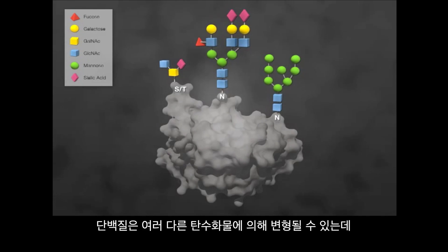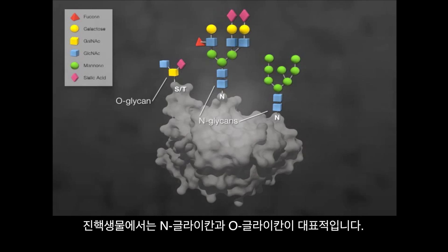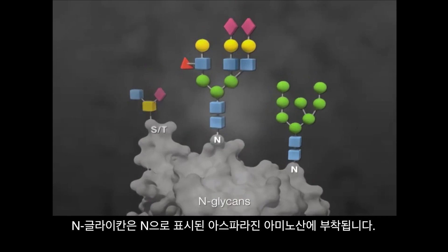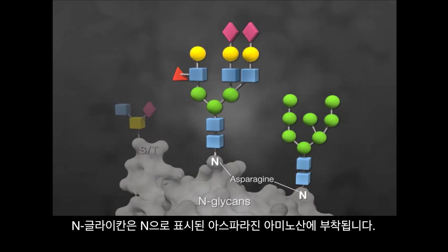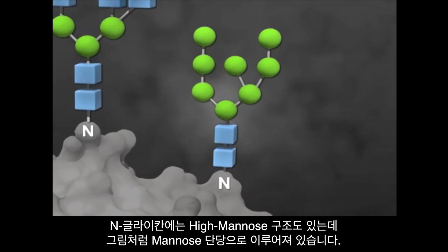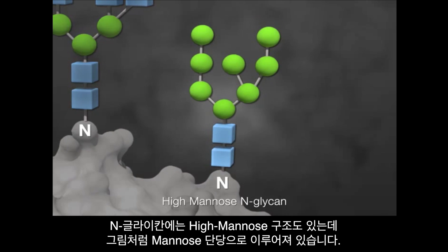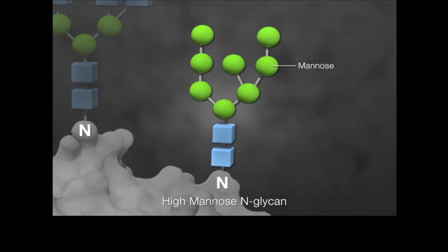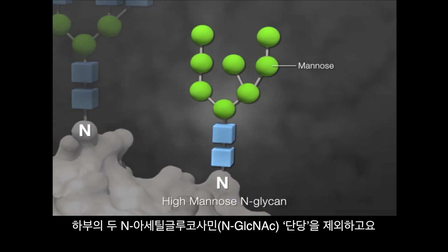Proteins can be modified with different kinds of carbohydrates, with N-glycans and O-glycans being the most common types in eukaryotic systems. N-glycans are attached to asparagine residues of the protein, shown with an N. N-glycans have a common biosynthesis pathway, which is reflected in the common structure of their core. N-glycans can be high-mannose, which means all the component monosaccharides are mannose residues, with the exception of the two-core N-acetylglucosamine (GlcNAc) residues.